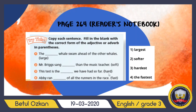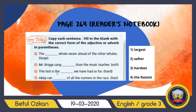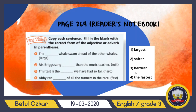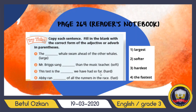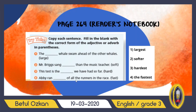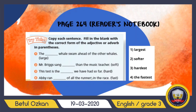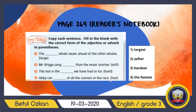Third sentence: 'This test is the ___ we have had so far.' The word 'hard' is given. I see 'the' and no 'than,' so I add -est: 'hardest.' This test is the hardest we have had so far. Fourth sentence: 'A Brand ___ of all the runners in the race.' I compare with more than two runners, so I add -est: 'fastest.' A Brand ran the fastest of all the runners in the race.